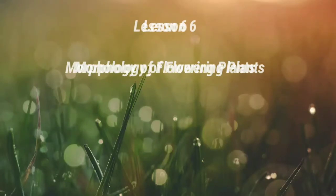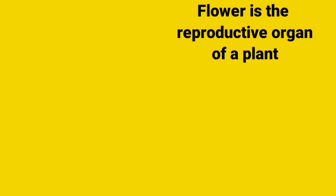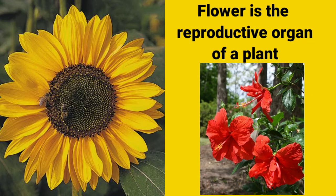Hello students, this is lesson 6 for the chapter morphology of flowering plants. In today's video you are going to learn about a very important part of the shoot system, which is the flower. A flower is a modification of the shoot meant for sexual reproduction — that means the flower is the reproductive organ of a plant. It comprises of four whorls.